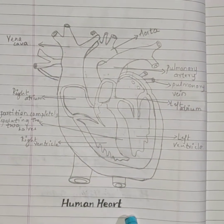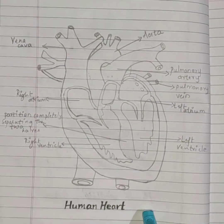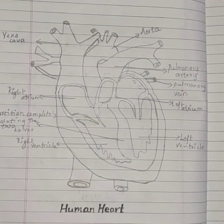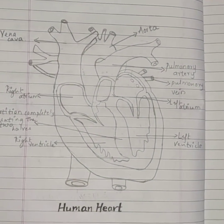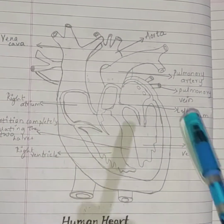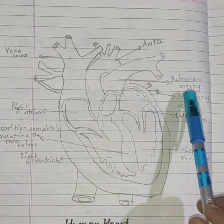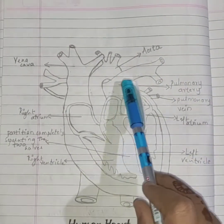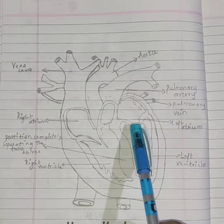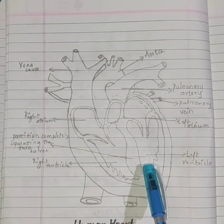Human heart. It is very much important, children. It seems a little bit difficult to draw but once you practice it, it will be very easy for you. Here: aorta, this is pulmonary artery, this is pulmonary vein, left atrium, left ventricle.